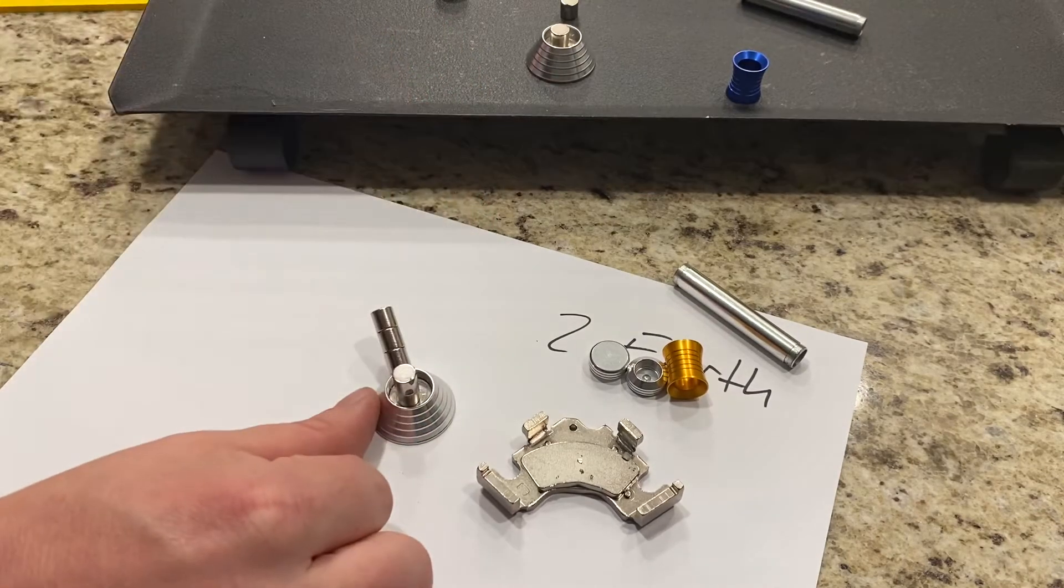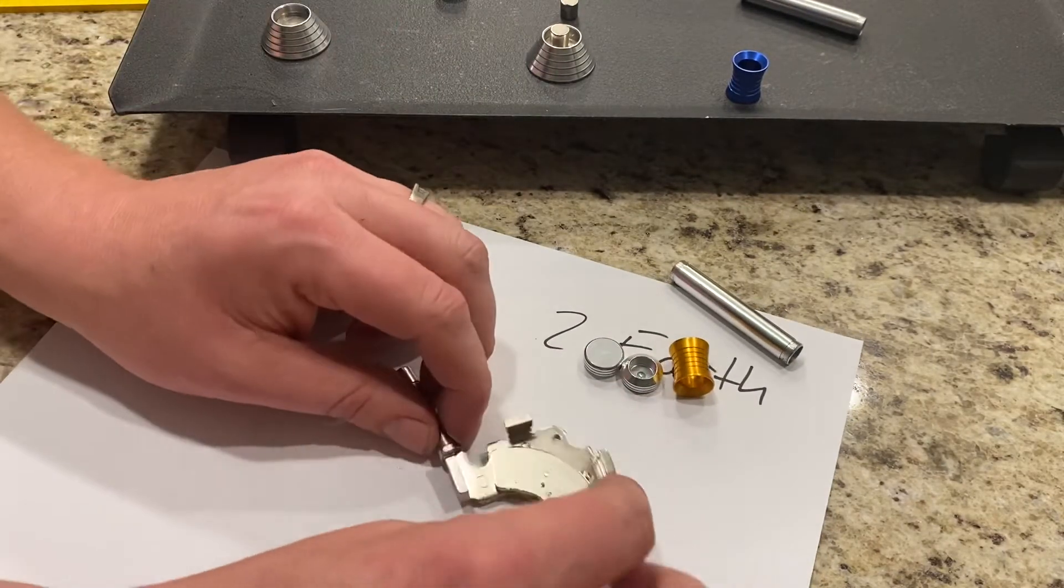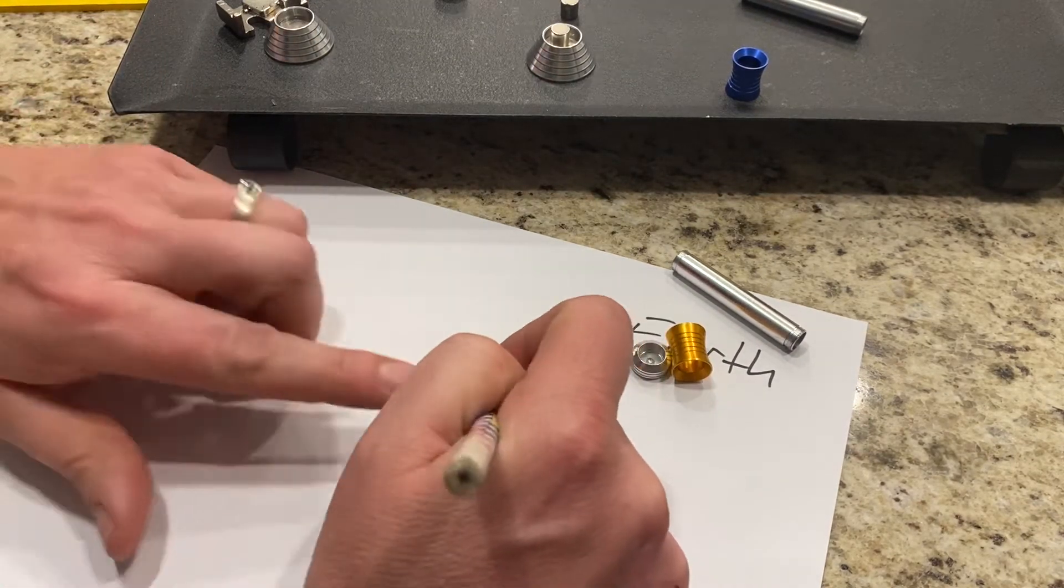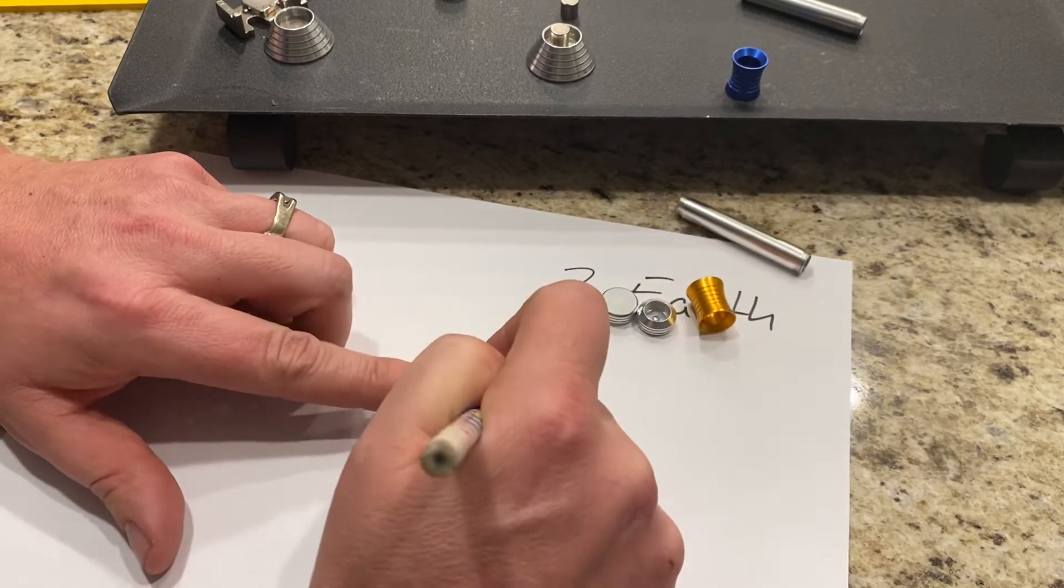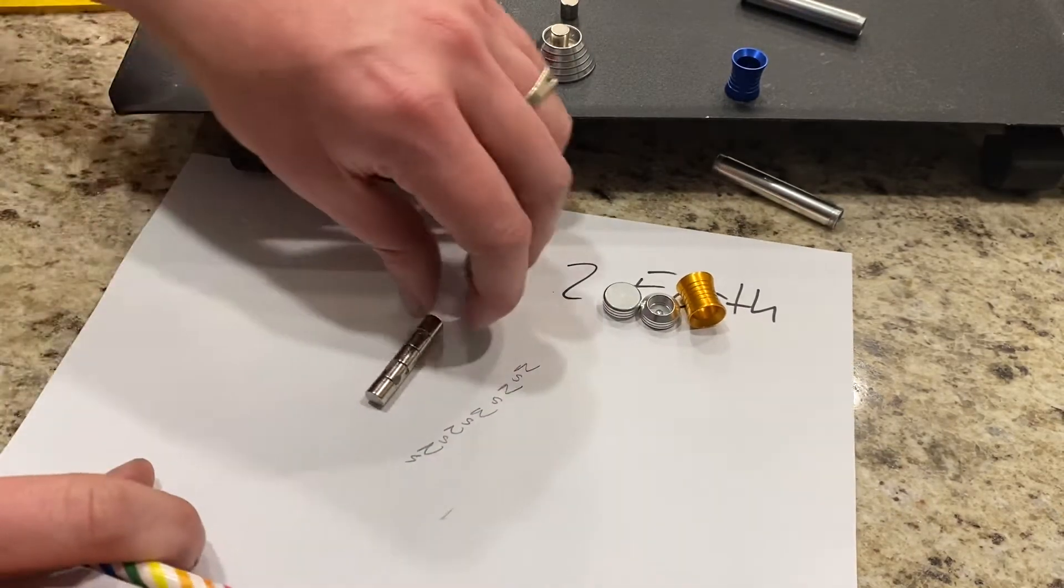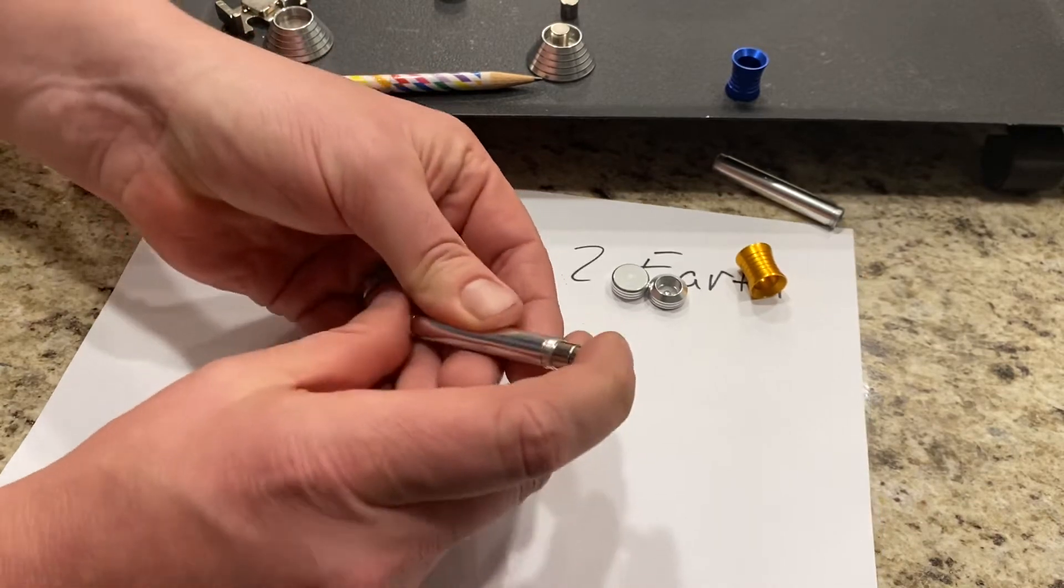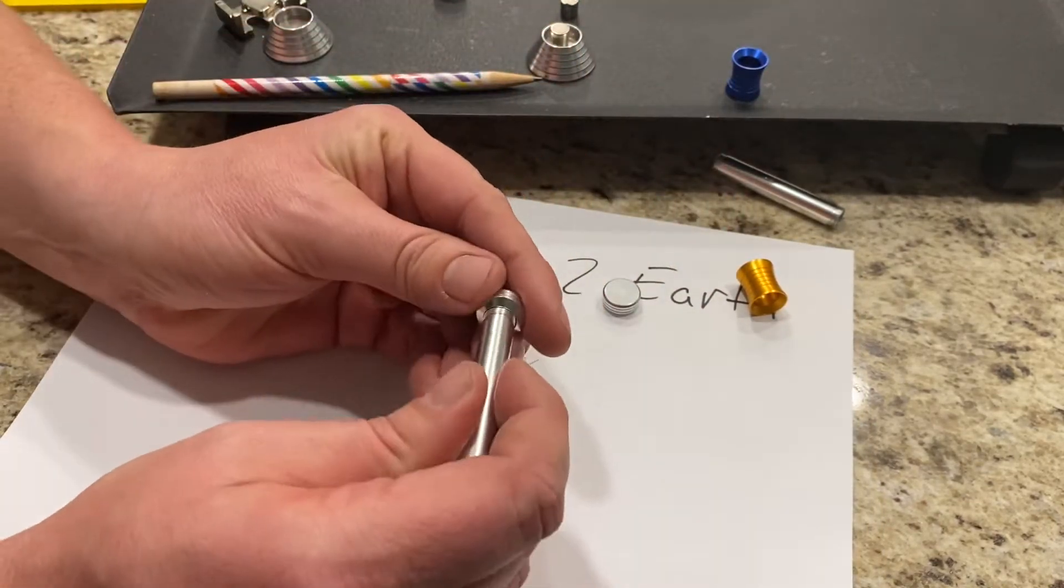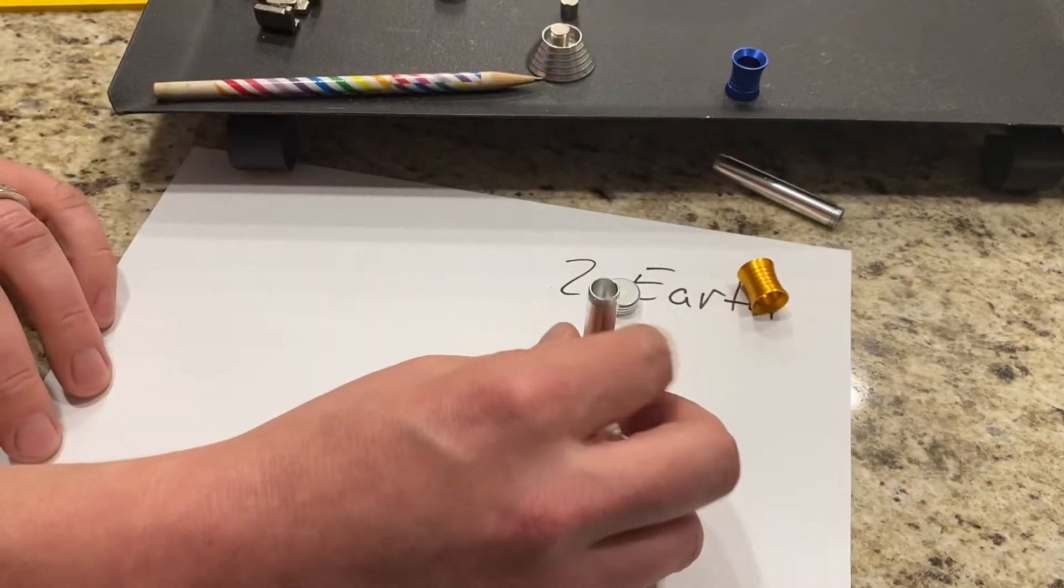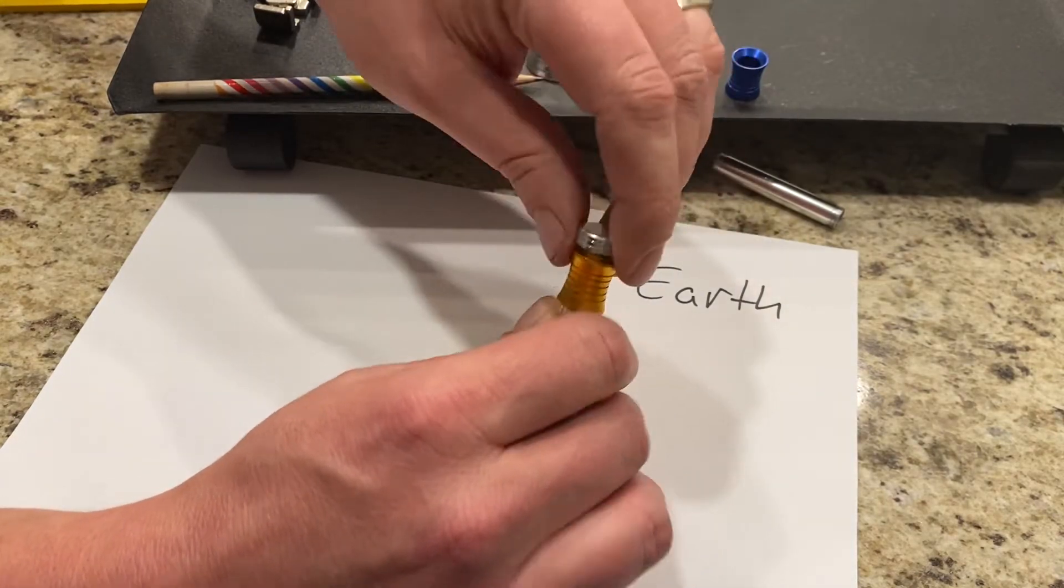So I'm going to put this together wrong to show something. The orientation of these magnets is north-south, north-south, north-south, north-south, north-south. And I'm just going to put them into the tube and put it on the base. Put this piece on, and this piece. And here we go.